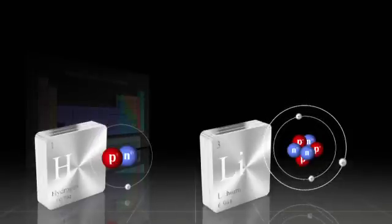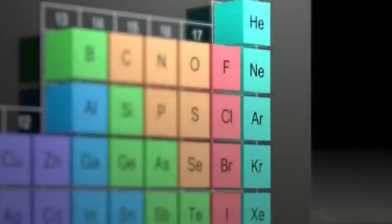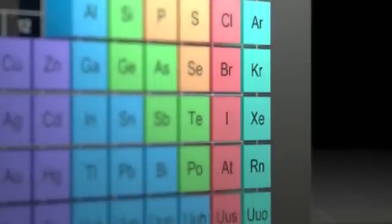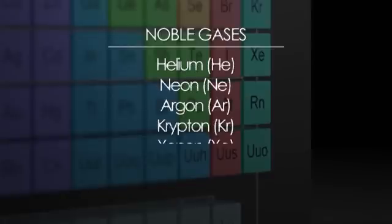Elements in the same column have the same chemical properties. For example, the last column, which contains elements such as helium, neon and argon, are called the noble gases. These gases are inert, which means they don't react easily with other elements.